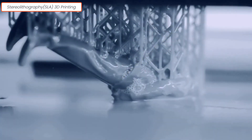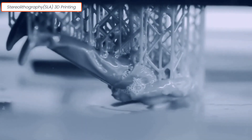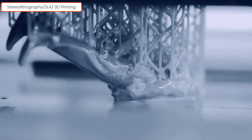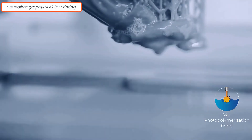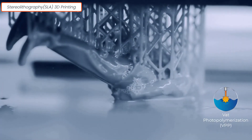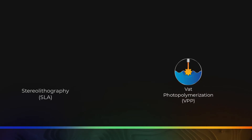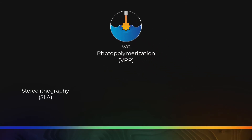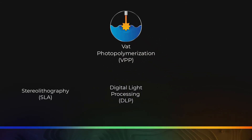Stereolithography (SLA) is another well-known 3D printing technology that utilizes the VAT Photopolymerization process. Under the same process, there are other technologies like Digital Light Processing (DLP) and Continuous Digital Light Processing. Each of the other processes also has a number of different technologies that utilize it.